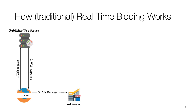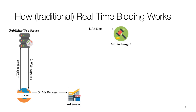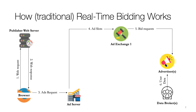An ad server is a platform that publishers use to manage and sell their inventory. The ad server will contact an ad exchange where a real-time auction will be kicked off, and as part of that auction, one or more advertisers will be requested for bids. These advertisers will gather data on the user from data brokers. This data may include age bracket, income bracket, interests, and other tracking information. Based on this information, the advertiser will decide how much it wants to bid and send that bid back to the ad exchange.